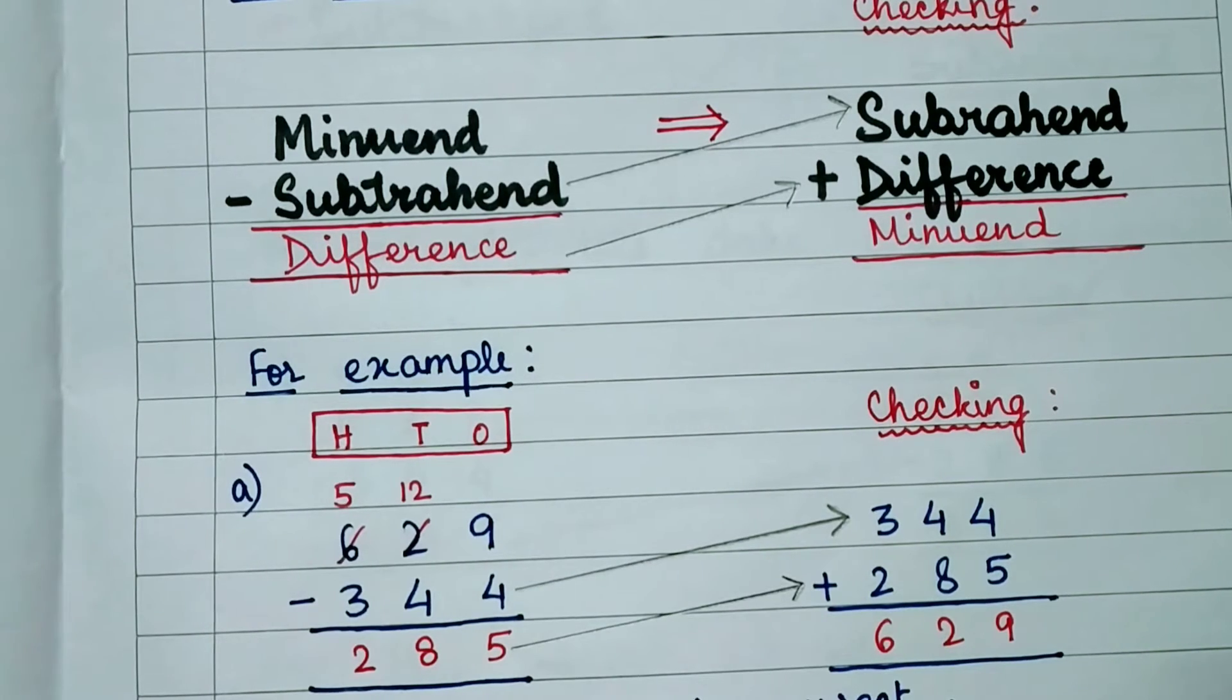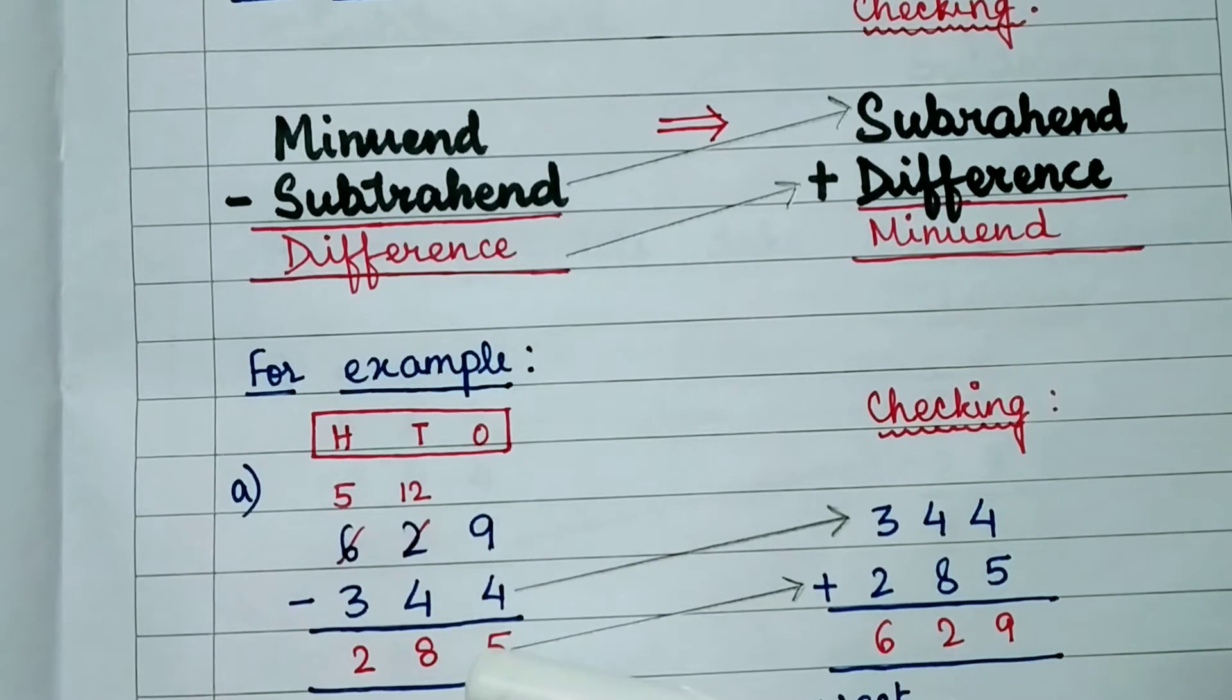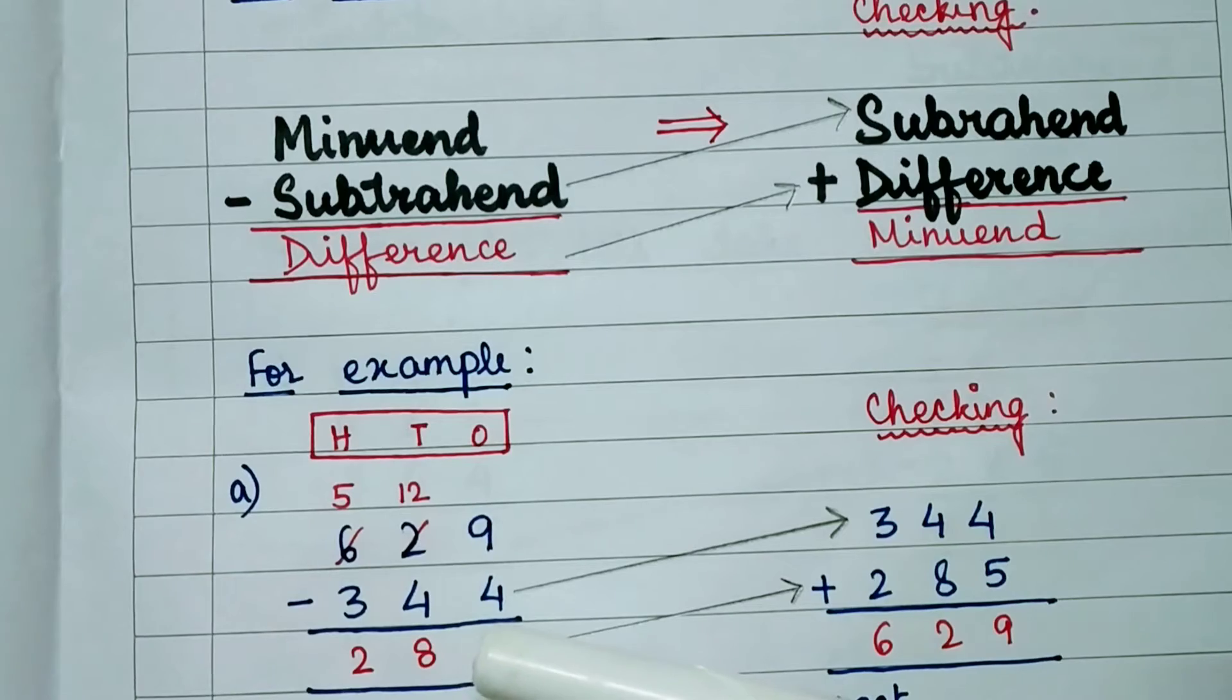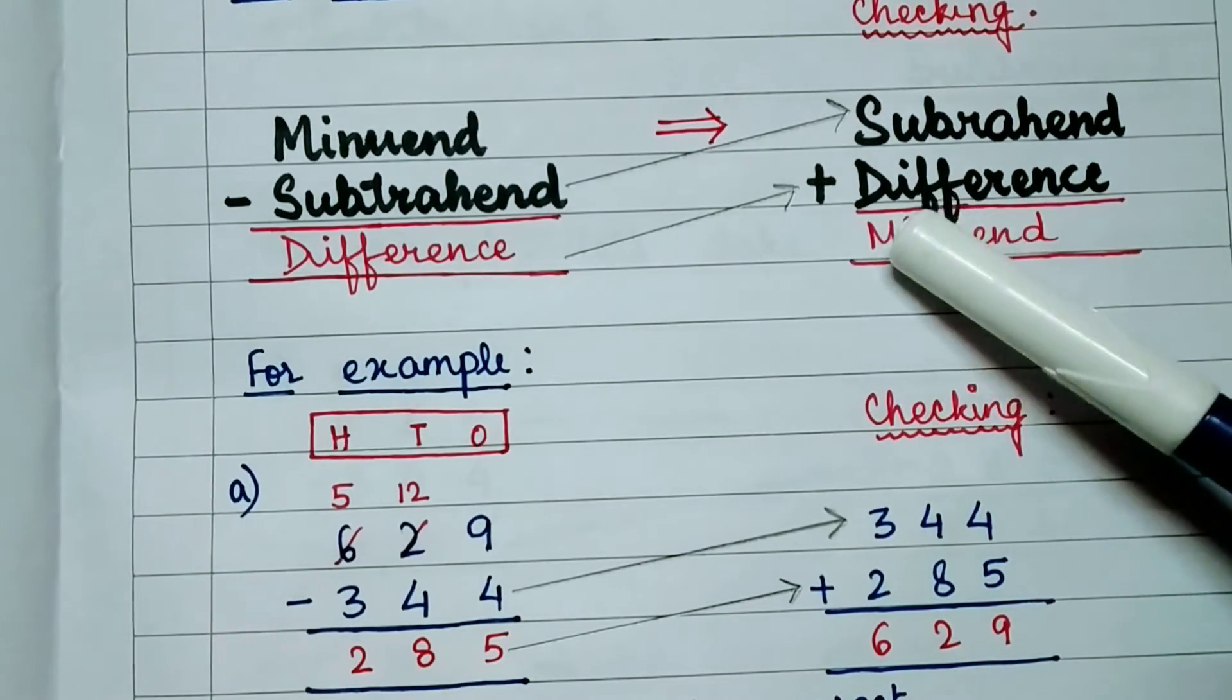Let us first subtract them. The difference is 285. Now let us check whether this subtraction, this difference is correct or not. We are following this method.